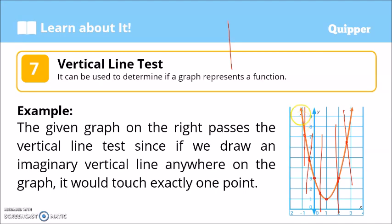What's an example that doesn't pass the vertical line test? For example, this graph. If we draw a vertical line test, notice that the vertical line passes through two points on the graph. So meaning this graph is not a function, because it should only touch the graph once to be a function.